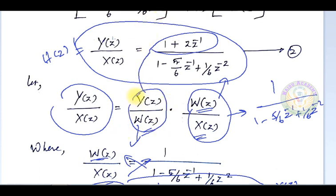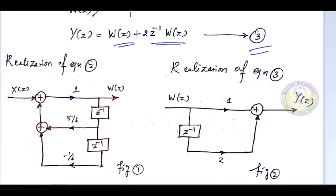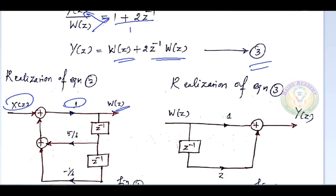The numerator part is Y(z)/W(z). Cross-multiplying equation 3 gives: Y(z) = W(z) + 2·z⁻¹·W(z). Now we implement equations 2 and 3 using block diagrams. For equation 2, W(z) is the output and X(z) is the input, with coefficient 1. Then (5/6)·z⁻¹ applied to W(z) gives the feedback term.